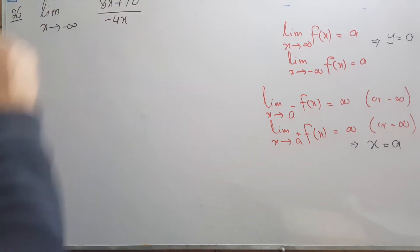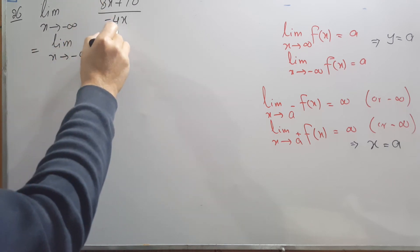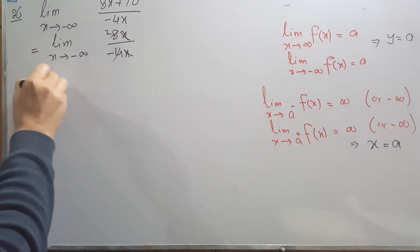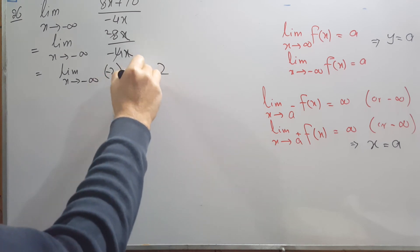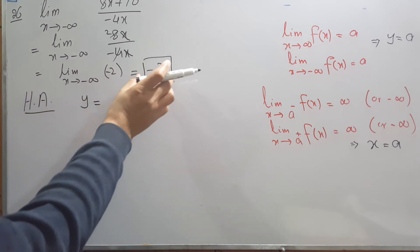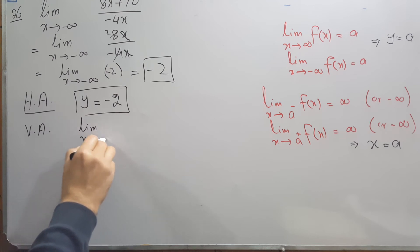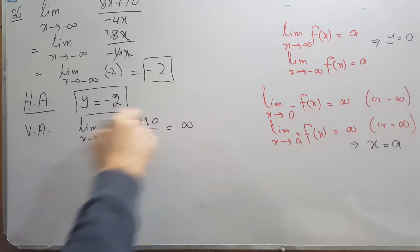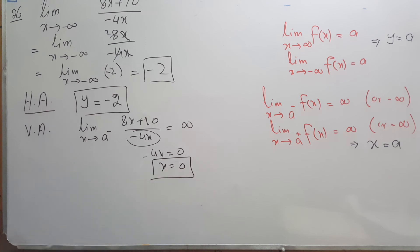Question 26 has the form (8x + 10)/(-4x). We keep the highest power terms: 8x in the numerator and -4x in the denominator. The x cancels with x, leaving 8 divided by -4, which equals -2. So the limit is -2, the horizontal asymptote is y = -2, and for the vertical asymptote, the denominator -4x equals zero when x = 0, so x = 0 is the vertical asymptote.